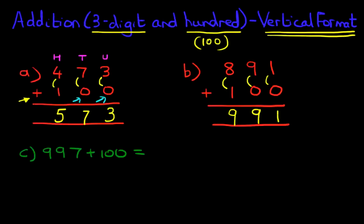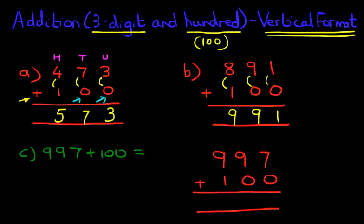So this is the exercise: to write it down in nice, neat columns. 997 plus 100. Write the digits directly below those on top. We're going to label it this time. You don't have to, but we're going to do this to illustrate what we're doing. So we've got units, tens and hundreds.